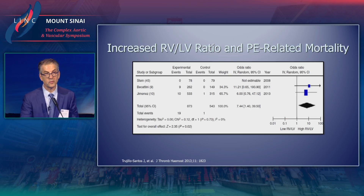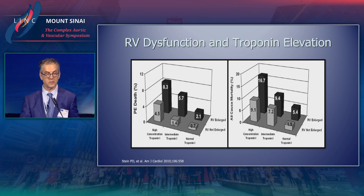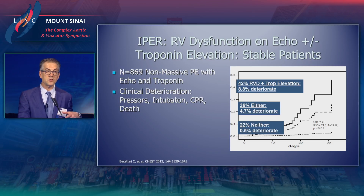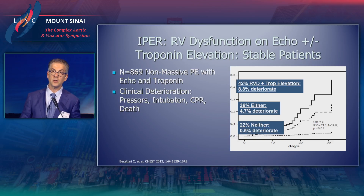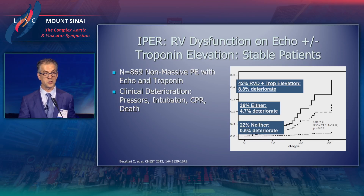When you have an increased RV to LV ratio on CT scan, you have a very significant increase in PE-related mortality. If you have RV dysfunction and troponin elevation, you're going to have a higher incidence of either PE-related death or all-cause mortality. Patients who have RV dysfunction on imaging — taken from the Italian PE registry — will have a significantly higher, almost 17-fold increase in deterioration requiring escalation of therapy.